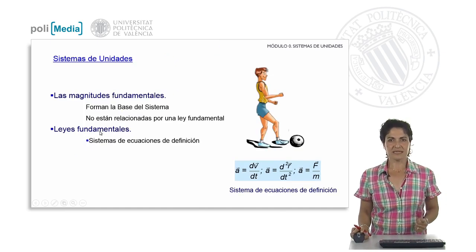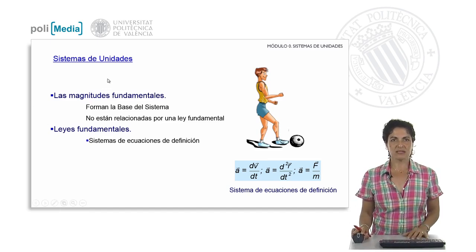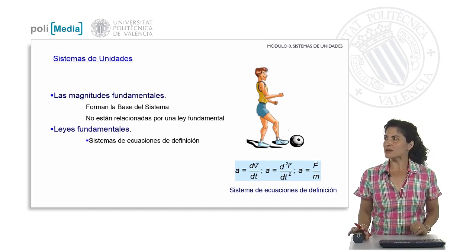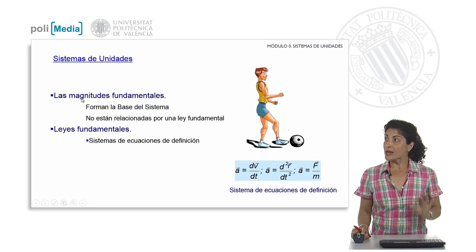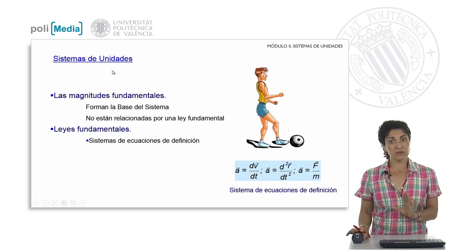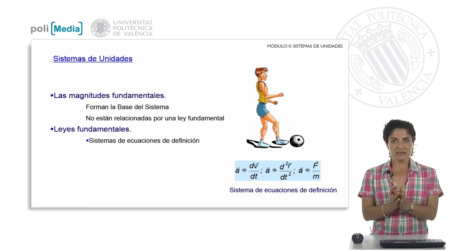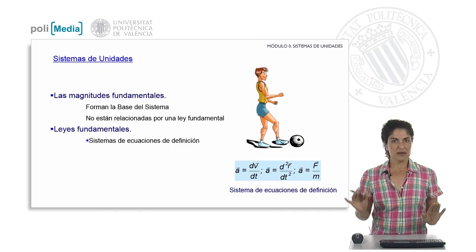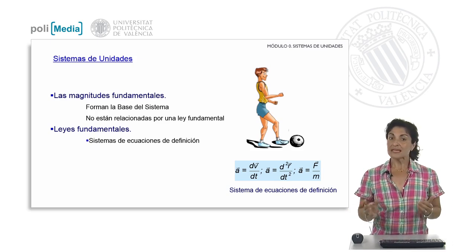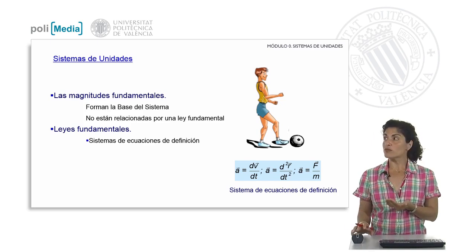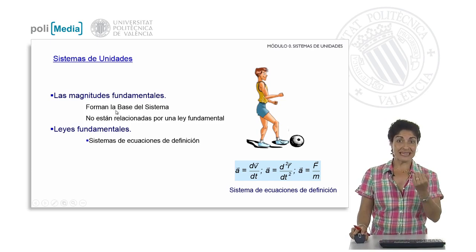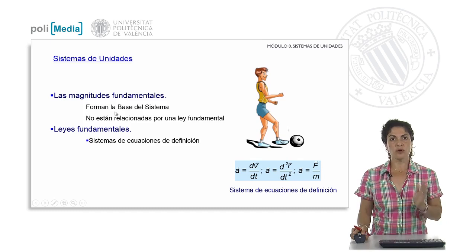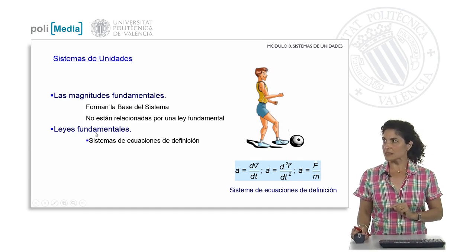When working with all these physical quantities, in order to communicate better among the different people who study phenomena, we take into account the systems of units in which we work. In a system of units, we have two fundamental parts: first, the set of fundamental magnitudes that define a given system of units — the minimum number of physical magnitudes from which any phenomenon could be studied. With a reduced number of fundamental physical quantities, it is enough to study a physical phenomenon. The rest of the quantities we will need are called derived quantities, and we relate these derived quantities to the fundamental ones through what is known as the fundamental laws — the systems of defining equations.